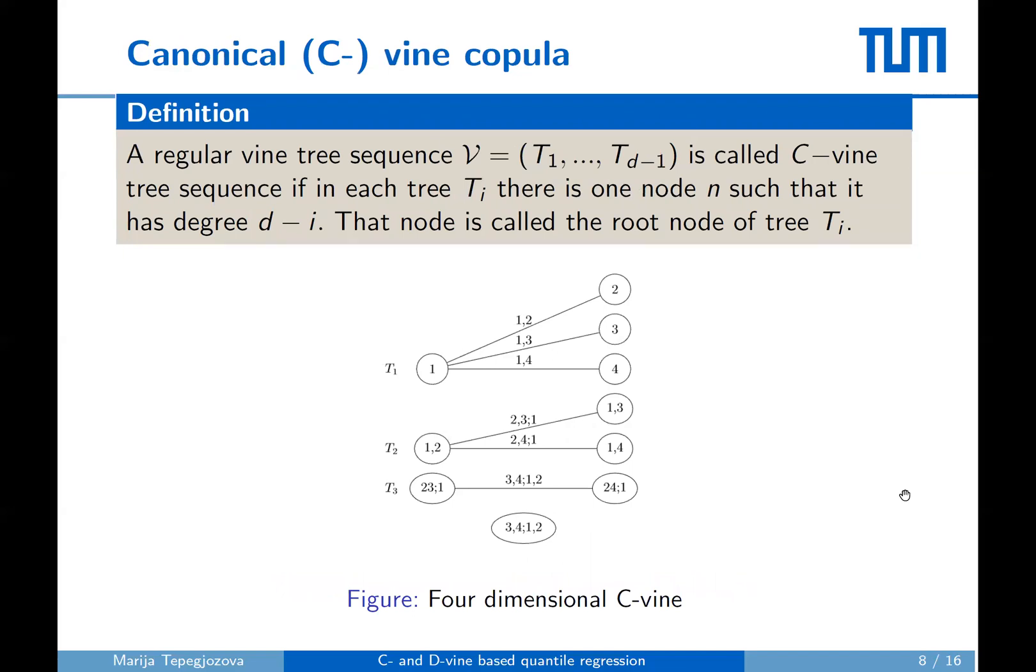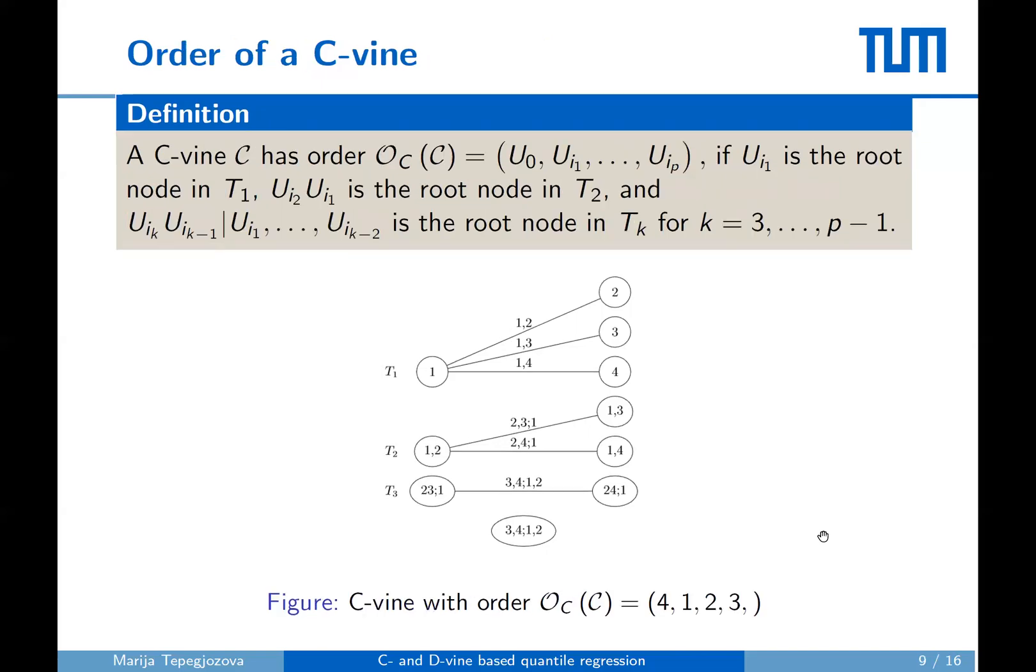The next class are canonical vines or C-vines. Their tree sequence contains only stars. An example of a C-vine in four dimensions is given in this figure. A C-vine tree sequence can be characterized by the order of the variables appearing in the root nodes. The specification of the order here is not as simple as for the D-vines, but it is well defined.